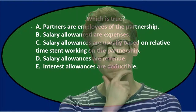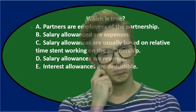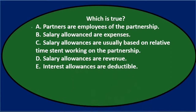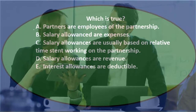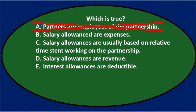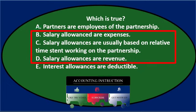A says partners are employees of the partnership. You might think it's kind of true — they could set themselves out as generating wages — but really they're the owners. They're clearly acting as owners of the business, so we're not normally calling them employees. B says salary allowances are expensed, which is tricky because B, C, and D all deal with salary allowances.